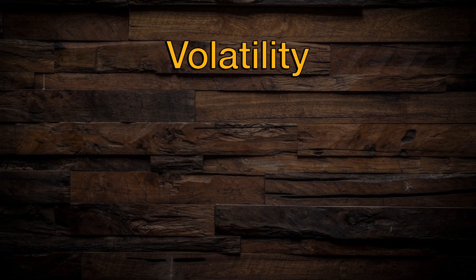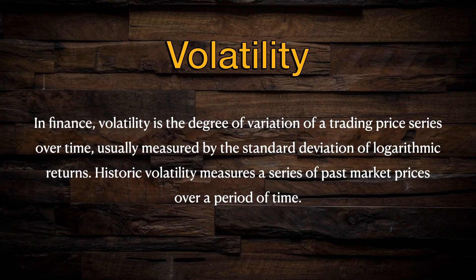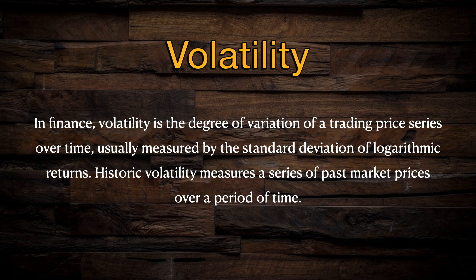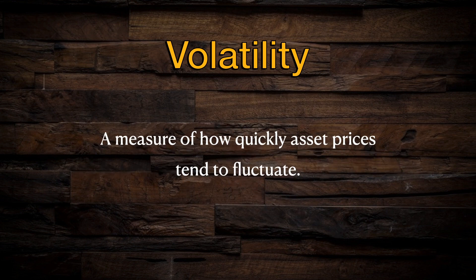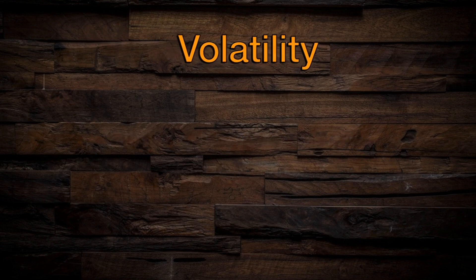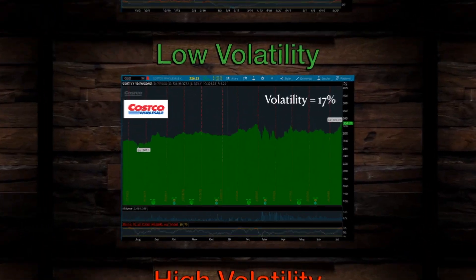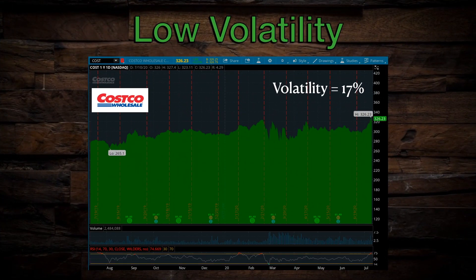All right, let's dive in. In finance, volatility is the degree of variation of a trading price series over time, usually measured by the standard deviation of logarithmic returns. To translate that into plain English, volatility is just a measure of how quickly prices tend to fluctuate. A stock with high volatility can be prone to erratic swings in share price — a good example would be Tesla — whereas a stock with low volatility tends to make much smaller percent moves, like Costco, that rarely moves more than a few percent in one day.